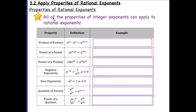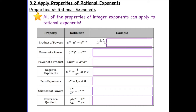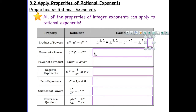Now let's apply these properties to rational exponents — starting with product of powers. If we have x to the one-half power times x to the three-halves power, we add those exponents, giving us x to the four-halves power. We can simplify four over two, so our final answer is x squared.